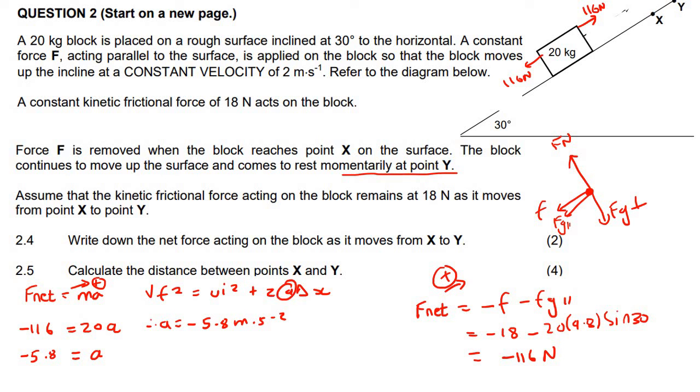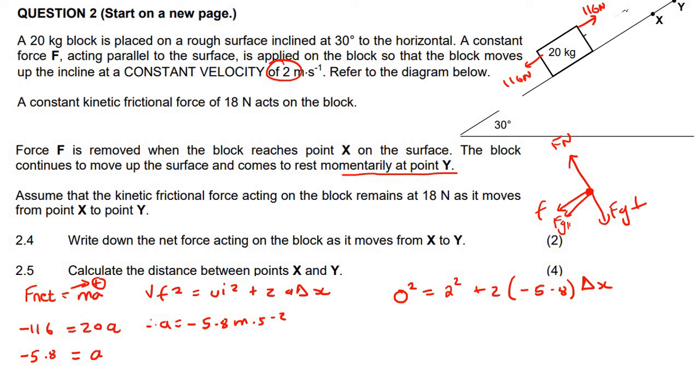Now we can use that acceleration in this formula here. We know that the final velocity is zero because the block will come to rest. The initial velocity is two and the acceleration is minus 5.8, but we don't have the distance. So the final velocity will be zero. The initial velocity is two, see there, just before that other force was removed. The acceleration, please remember there's a negative, and then delta X. Now you can solve this in multiple ways, but I'm going to take this over to the right hand side. We'll end up with four equals 11.6 delta X. And so if you get delta X alone, you would say four over 11.6, and that should give us 0.34 meters.